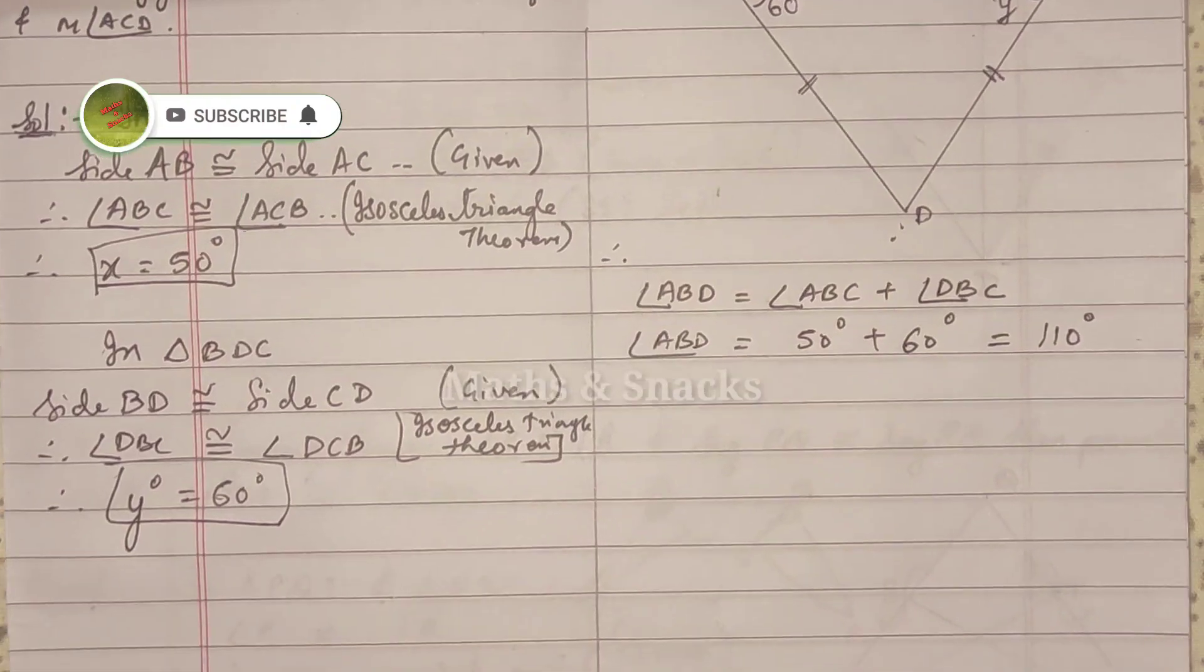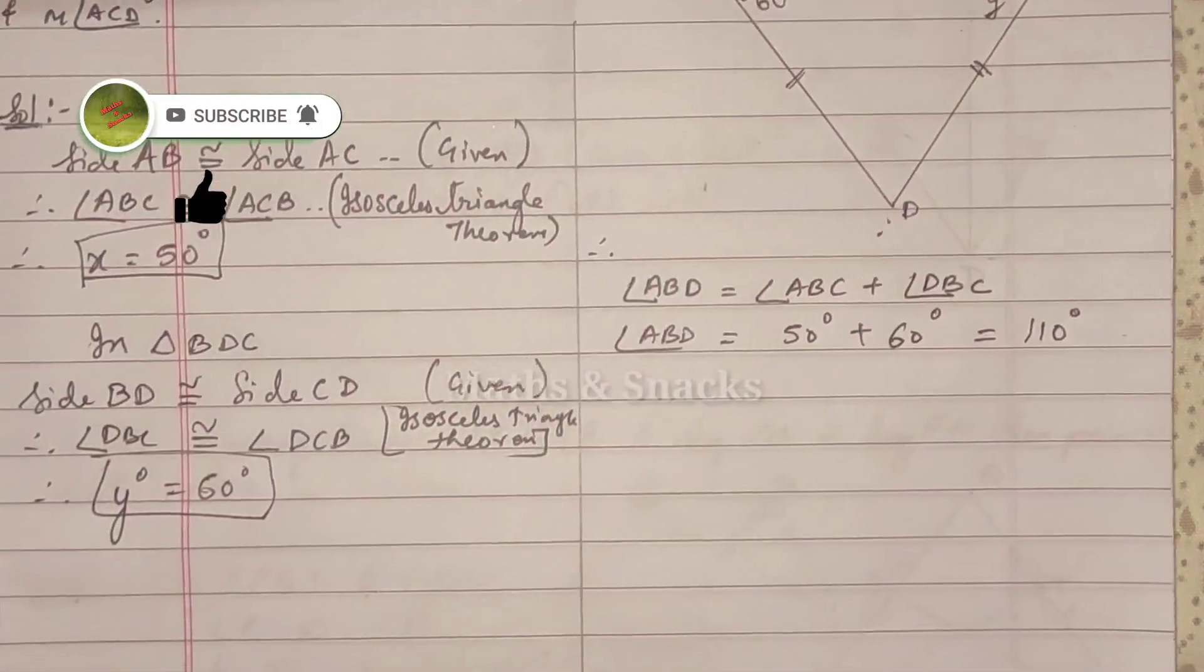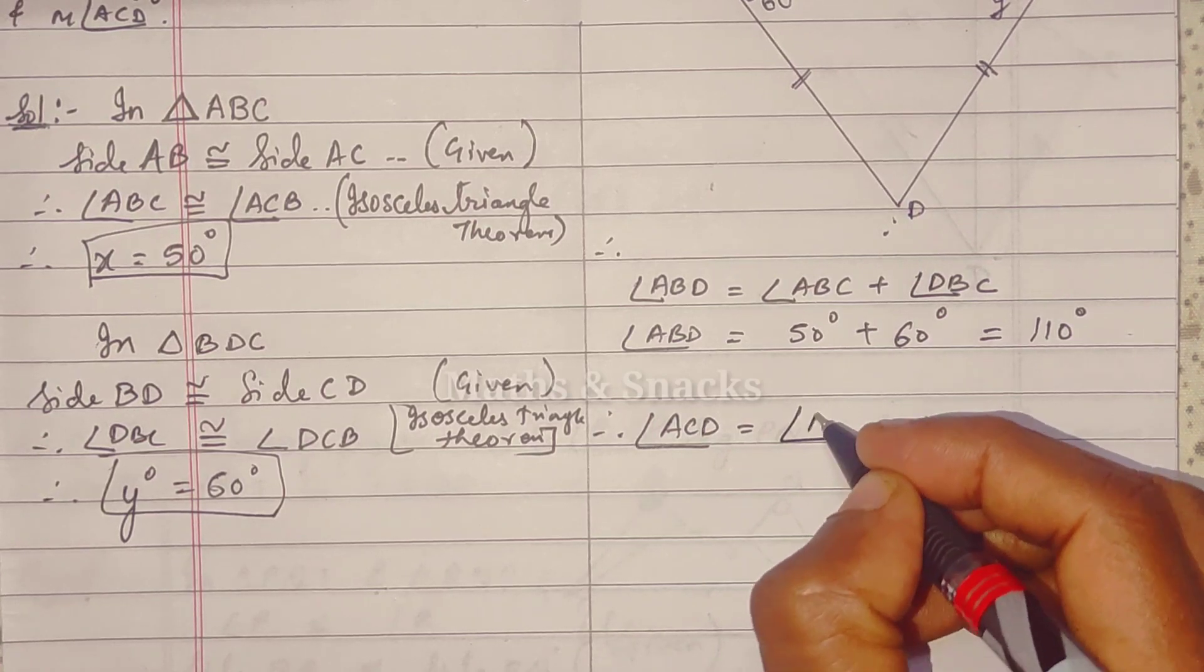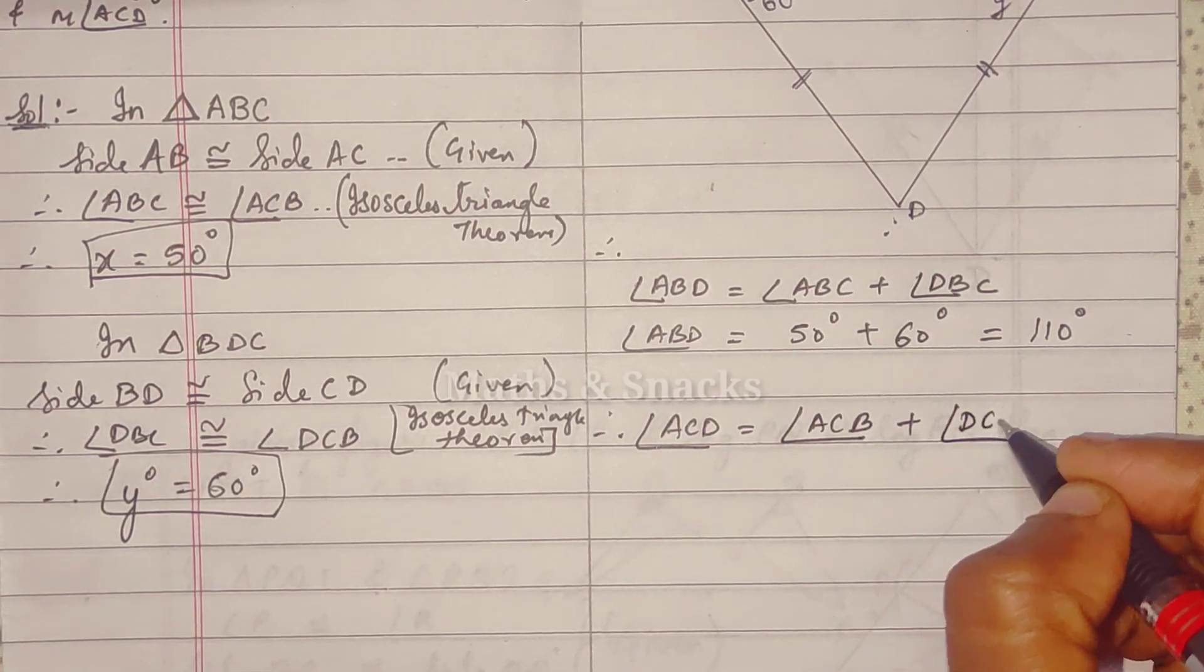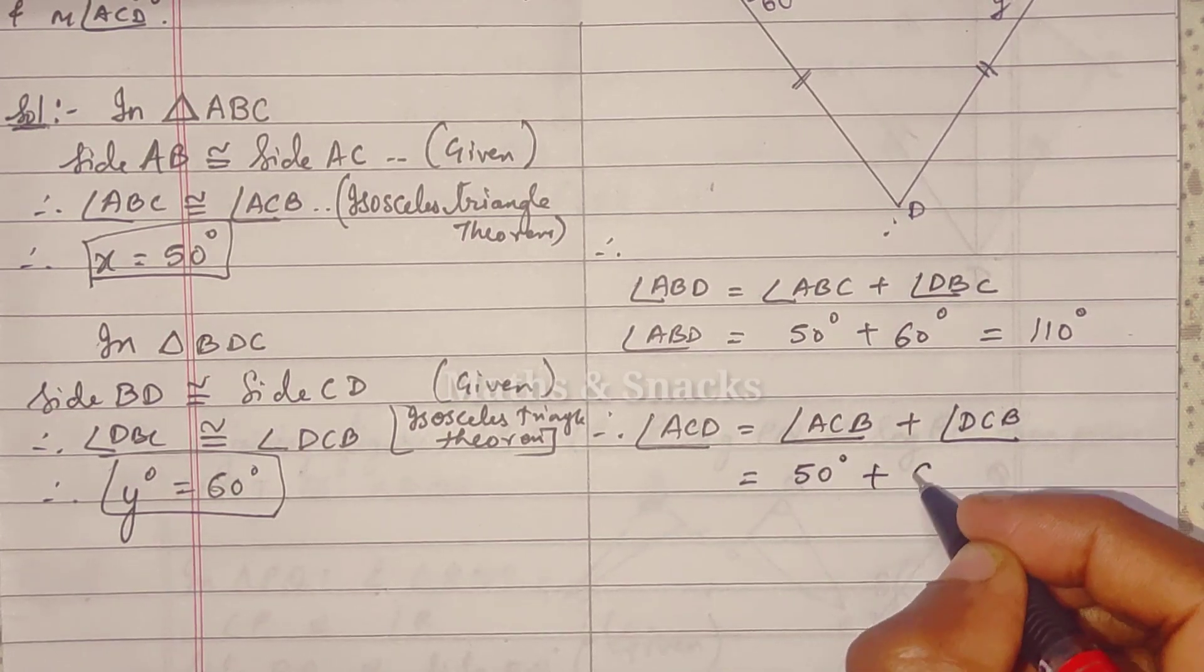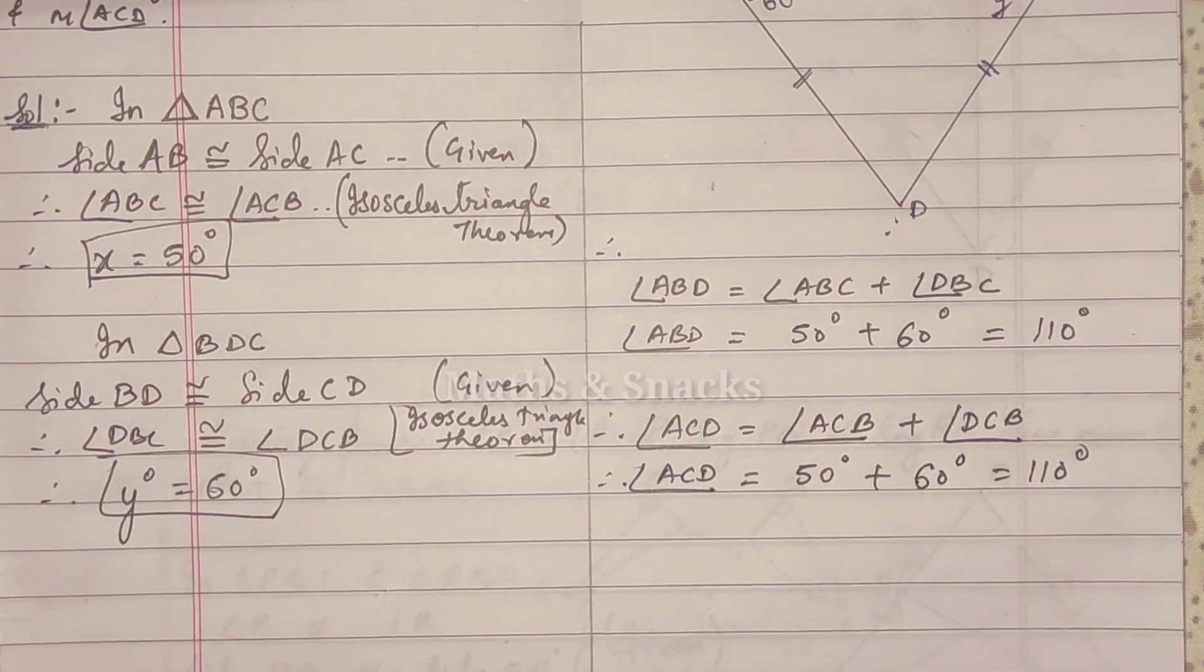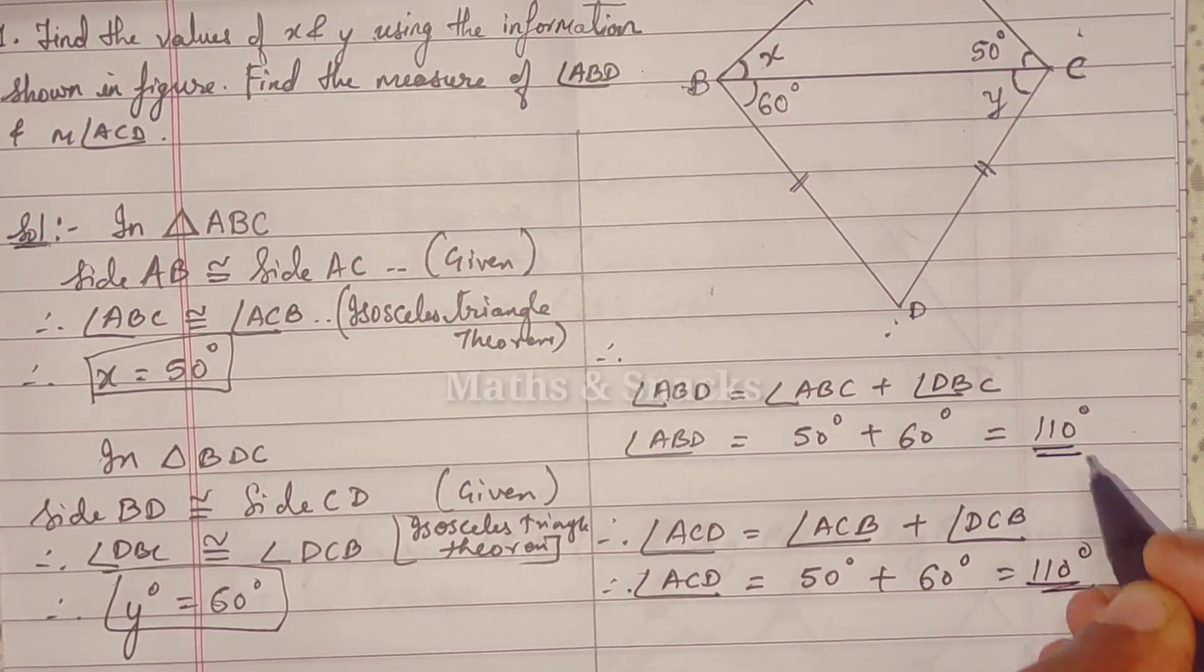Similarly, we have to find out all the answers. So now angle ACD. Therefore, angle ACD is equals to angle ACB plus angle DCB. So 50 degrees plus 60 degrees, that equals 110 degrees. Hence we have found all the answers.